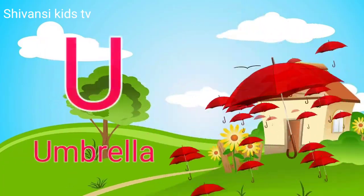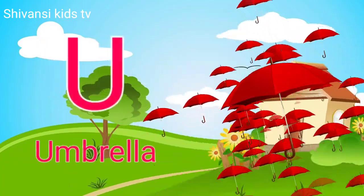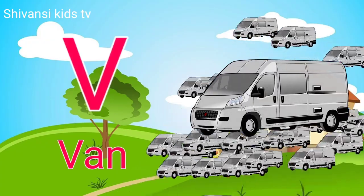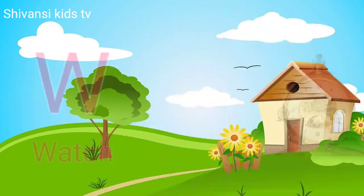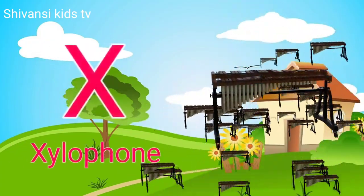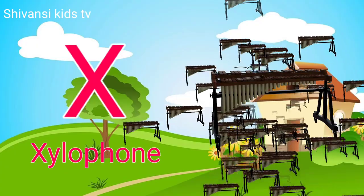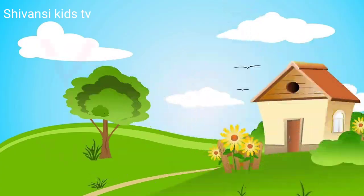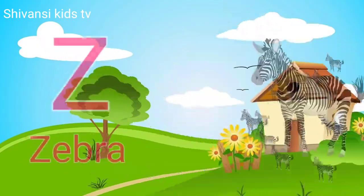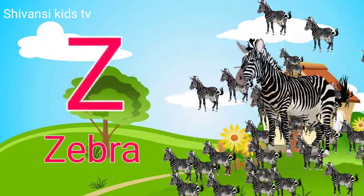U for umbrella, V for van, W for watch, X for xylophone, Y for yard, Z for zebra.